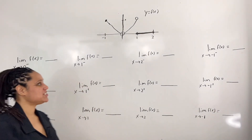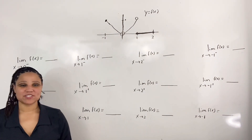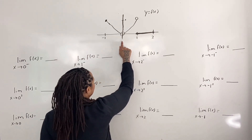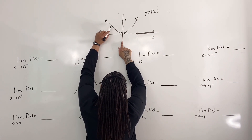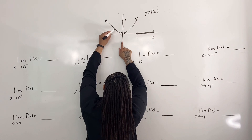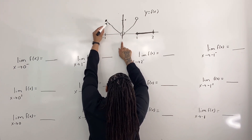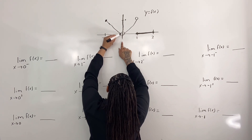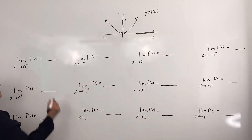Let us look at our first question. We want to evaluate the limit as x approaches 0 from the left. I'm going to place one hand by x equals 0 so that I know where to observe the graph horizontally. Then I place my other hand to the left of x equals 0, but somewhere on the graph. Then I travel the graph from left to right until my hand is almost in vertical alignment with the first hand. We see that as x approaches 0 from the left, the y value approaches 0. So the limit as x approaches 0 from the left is equal to 0.